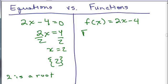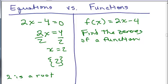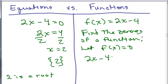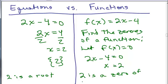When we say find the zeros of a function, it means we're setting F of X equal to 0. To find the zeros of F of X, let F of X equal 0, and then we get an equation: 2X minus 4 equals 0. We solve it just like before and get X equals 2. So 2 is a root of the equation, but 2 is a zero of the function.